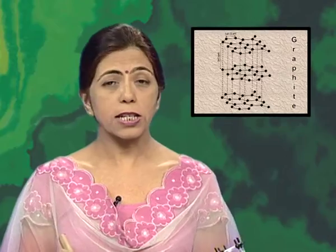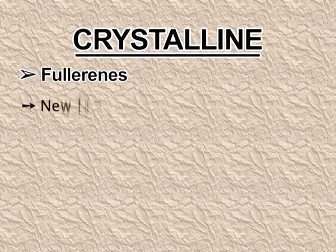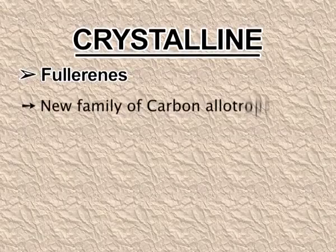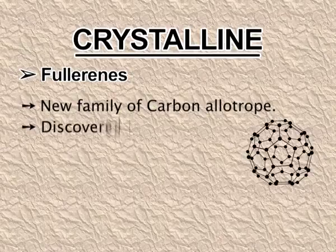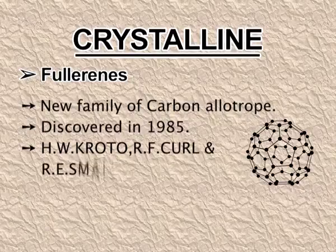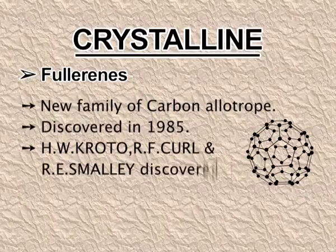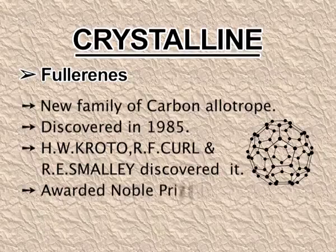The next crystalline allotropic form of carbon is fullerenes — a new family of carbon allotropes discovered in 1985 by H.W. Kroto, R.F. Curl, and R.E. Smalley. They were awarded the Nobel Prize in 1996.